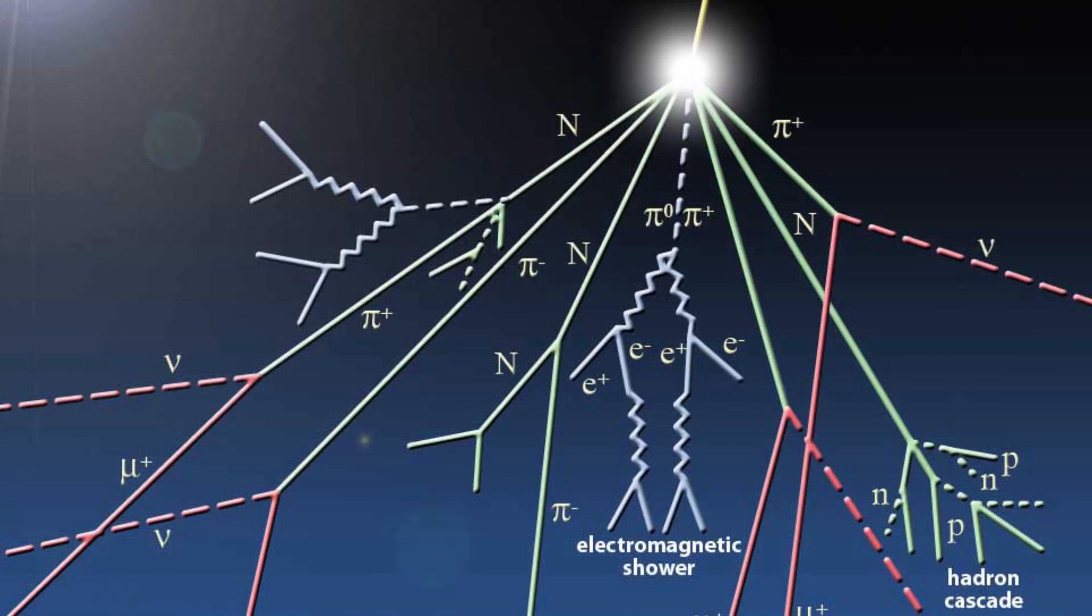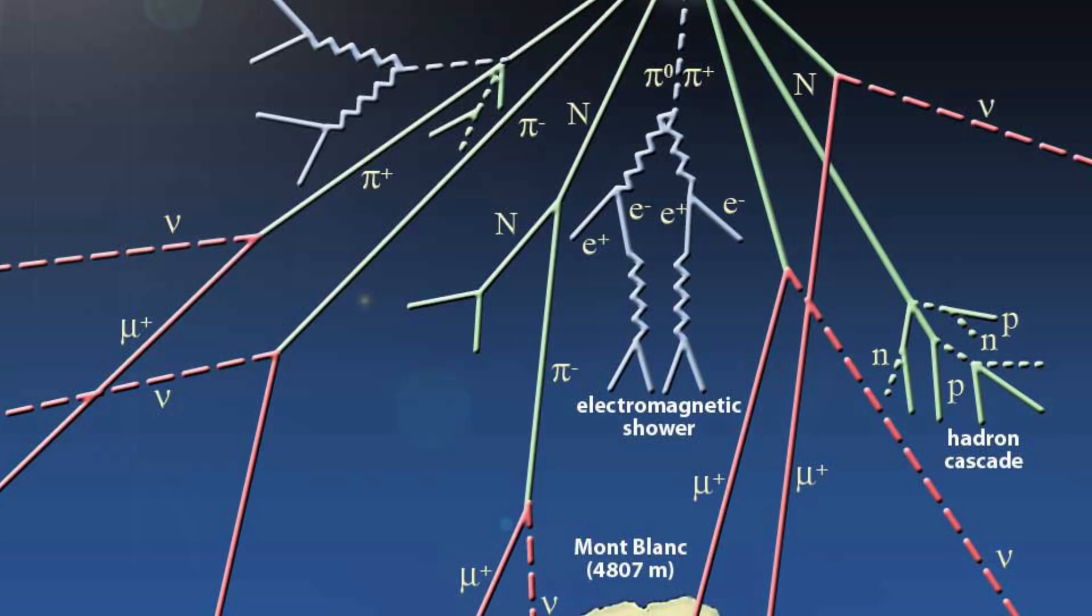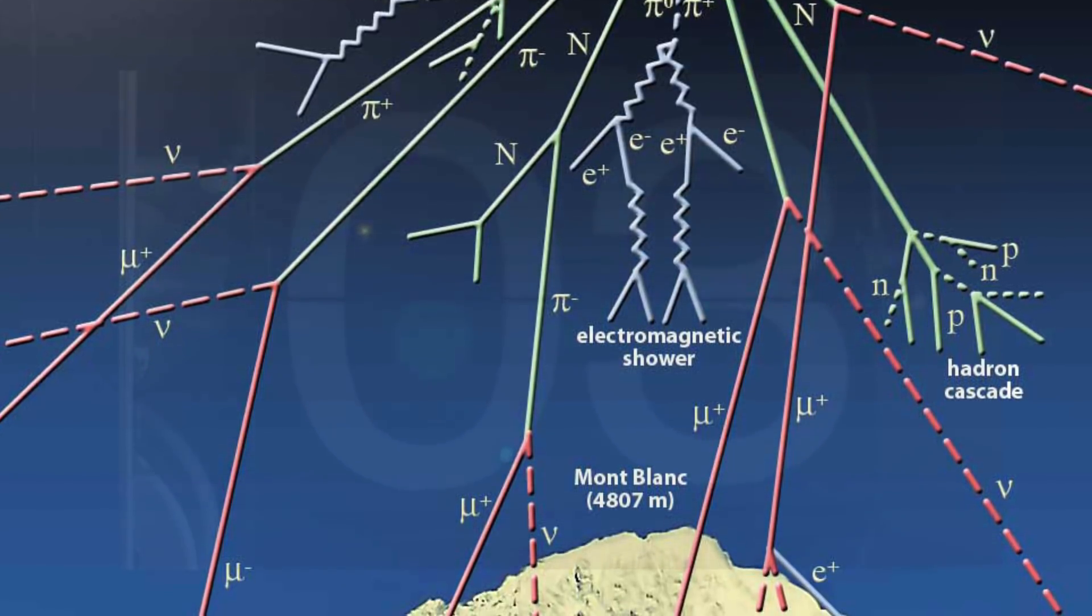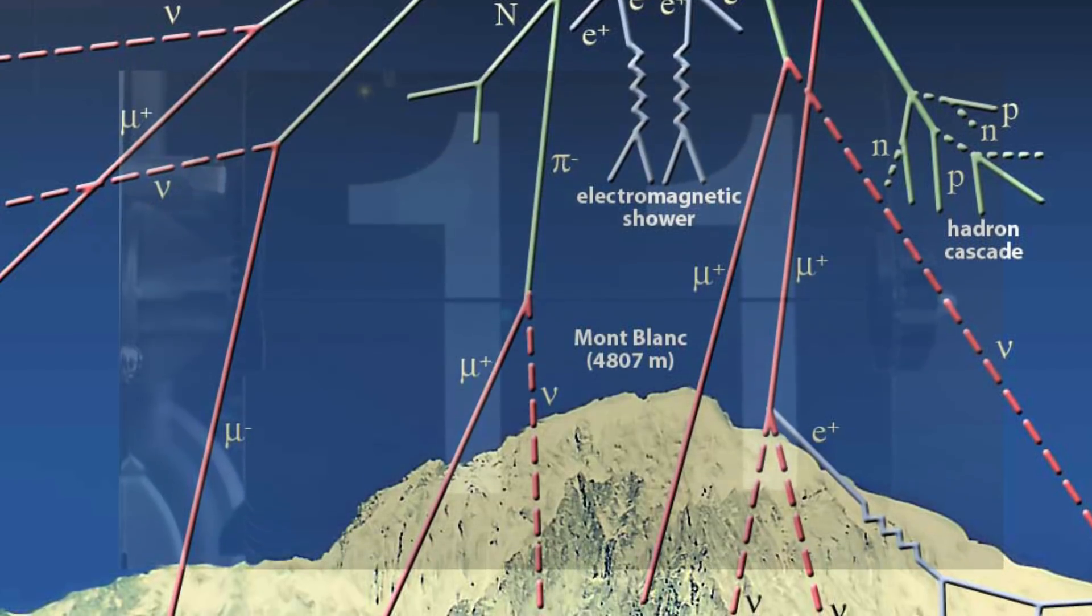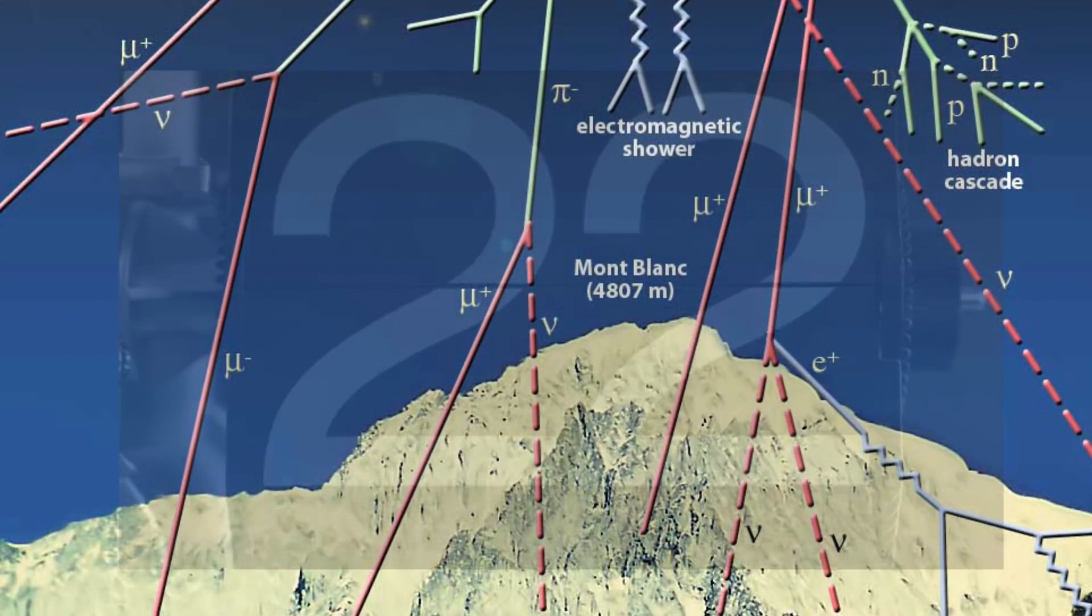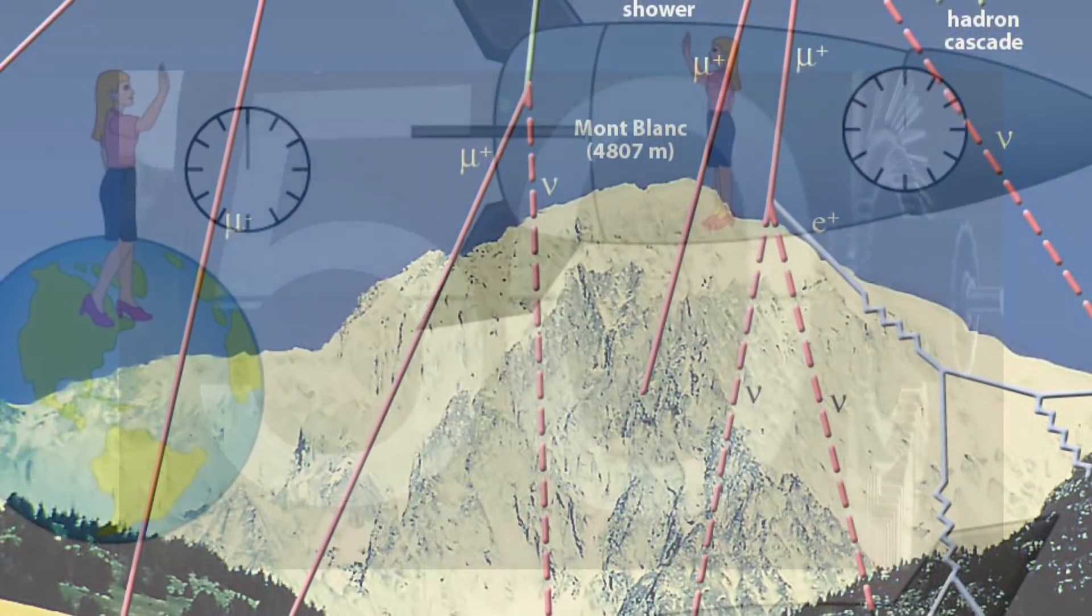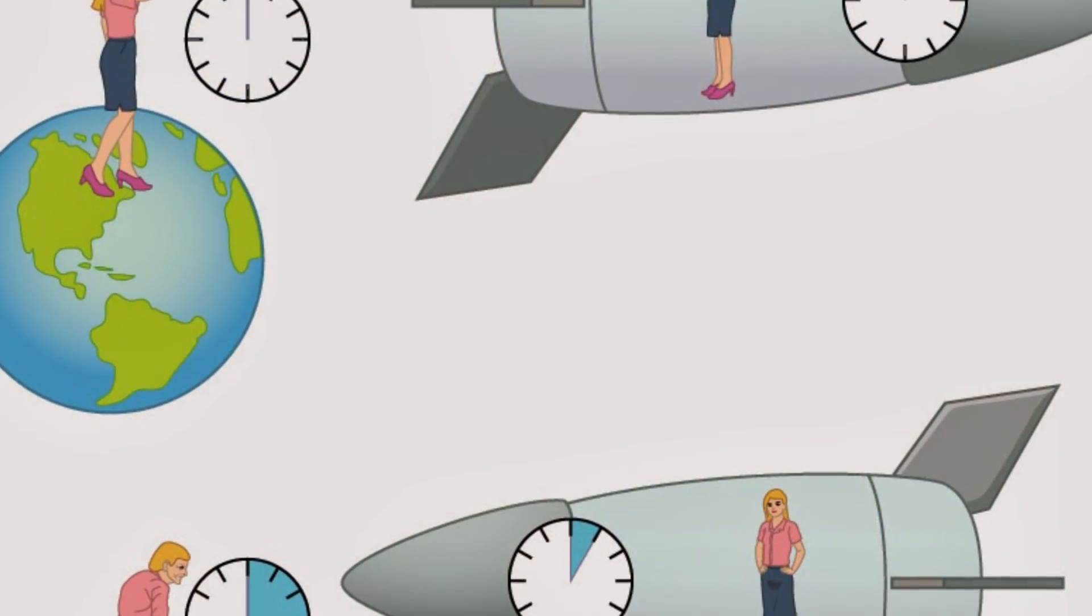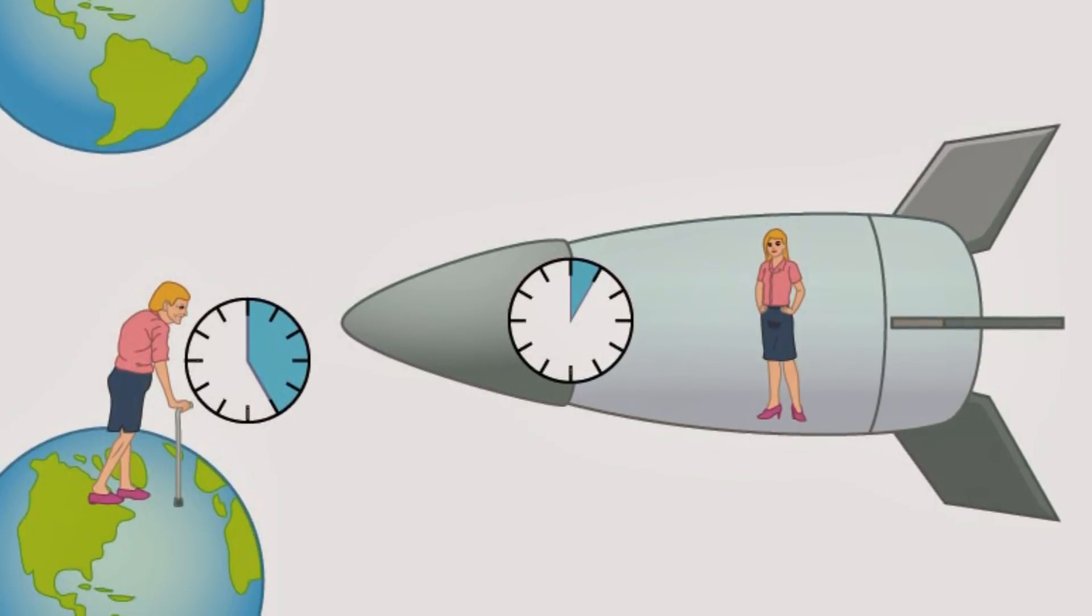Muons also have an average lifetime of 2.2 microseconds, which means that there should only be so many of these that even reach the surface of the Earth. However, in the early 40s, scientists measured over 10 times more muons reaching a certain location on Earth than expected. This was essentially the first time that time dilation, due to Einstein's special theory of relativity, was proven to be correct. Time does in fact tick slower for objects moving at very fast speeds.